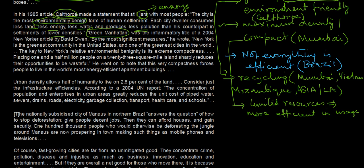Next we see the example of Green Manhattan, which is cited as an example of a green city. New York is the greenest community in the United States — as an example of eco-friendliness or greenness, we have the example of New York. The key to New York's relative environmental benignity is its extreme compactness. When you are living in a very compact or densely populated area, you have limited resources and therefore cannot afford to be wasteful, so you try to conserve resources.